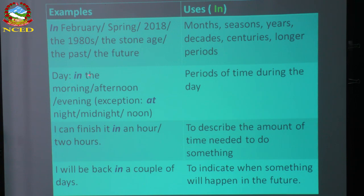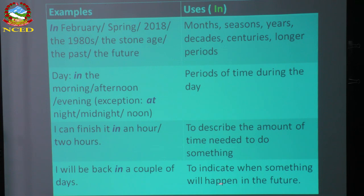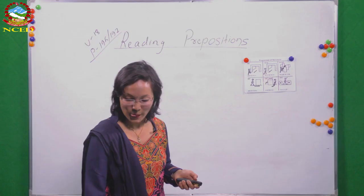We use 'in' with parts of the day — periods of time during the day: in the morning, in the afternoon, in the evening. Exception: we use 'at' for midnight, night, and noon. We also use 'in' to show the duration of time needed: 'I can finish it in an hour,' 'in two hours.' And to indicate when something will happen in the future: 'I will be back in a couple of days.' For these expressions, we use 'in.'